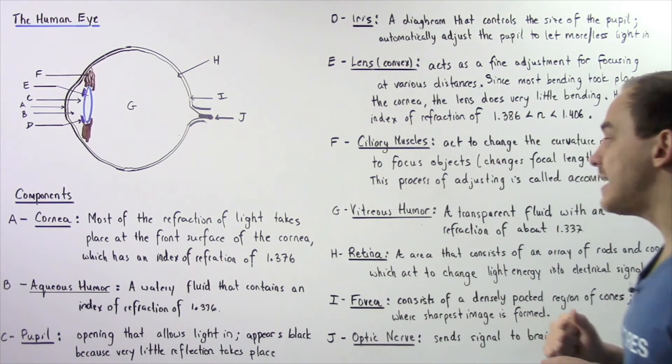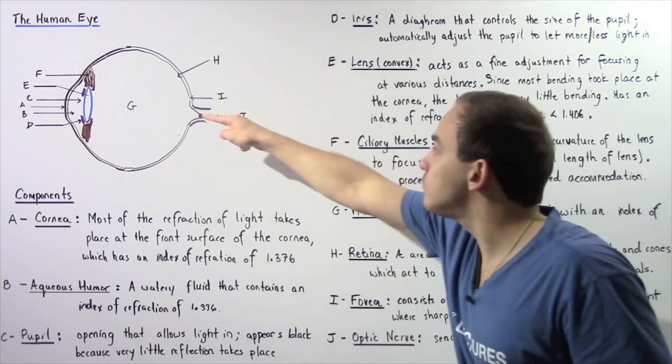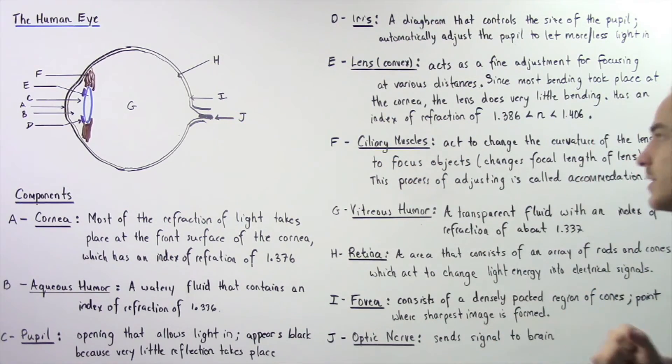And those electrical signals then travel to the brain via the optic nerve. The optic nerve essentially sends the signal, the electrical signal to the brain. And the brain then interprets and analyzes that signal.